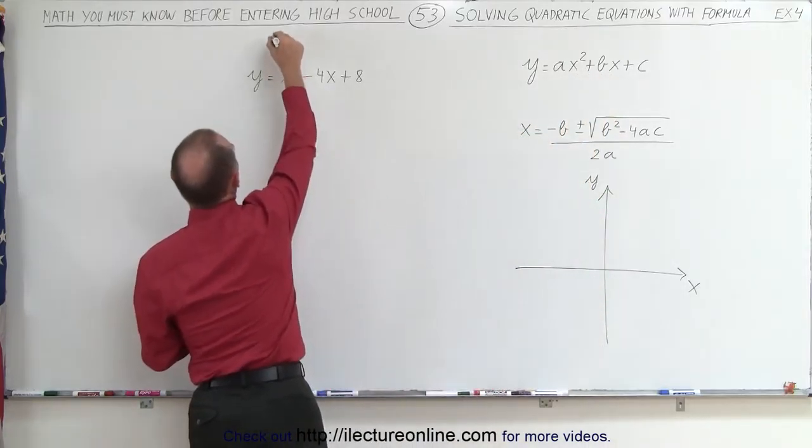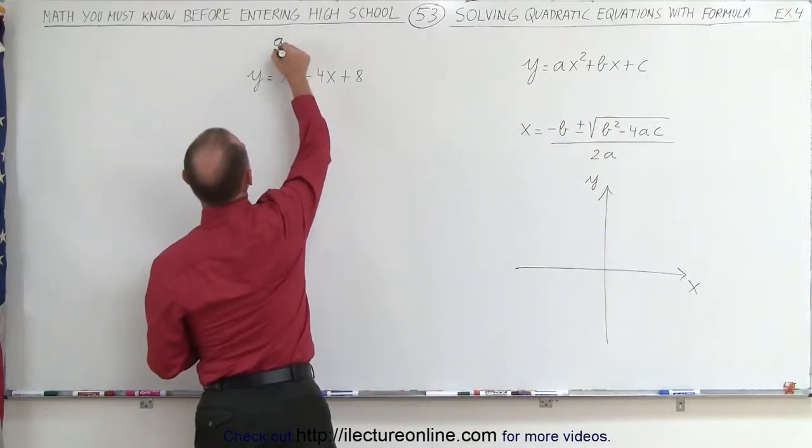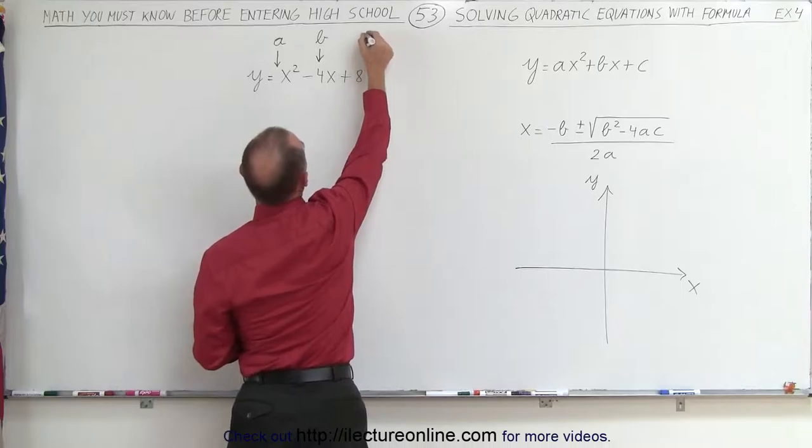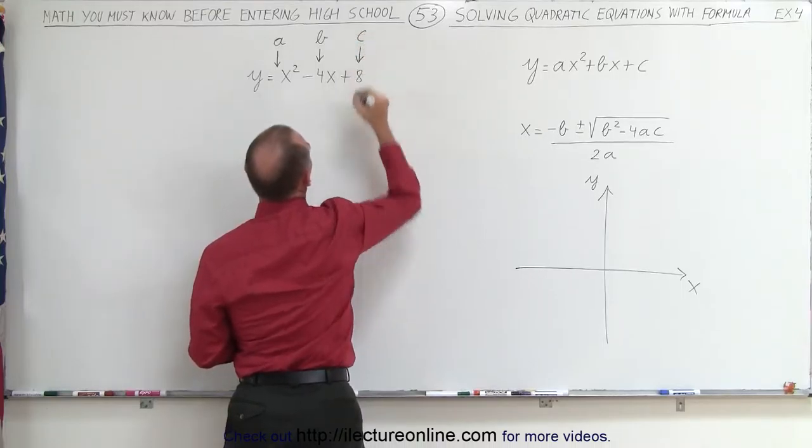If we go over here, we can realize a is represented by the number 1, b is represented by the number negative 4, and c is represented by the number 8.